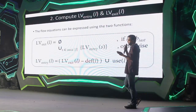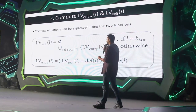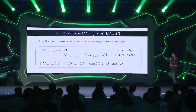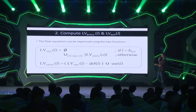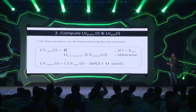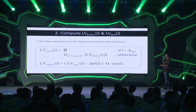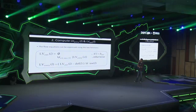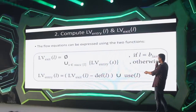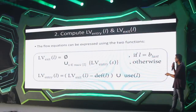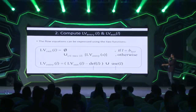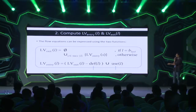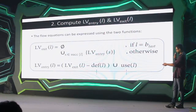To give a mathematical representation — data flow analysis needs math for proof of correctness. LvExit of a statement L will be phi if L is the last statement, and otherwise the union over LvEntry sets of all successors of L. LvEntry of L equals (LvExit(L) minus Def(L)) union Use(L). Let's see this in action with the def-use columns already populated.